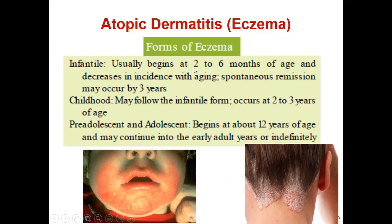The infantile form usually begins at two to six months of age and decreases in incidence with aging. Spontaneous remissions may occur by three years. The childhood form may follow the infantile form and occur at two to three years of age. The pre-adolescence and adolescence form begins at about 12 years of age and may continue into early adult years or at any time in their life.